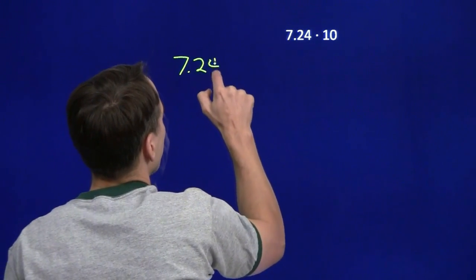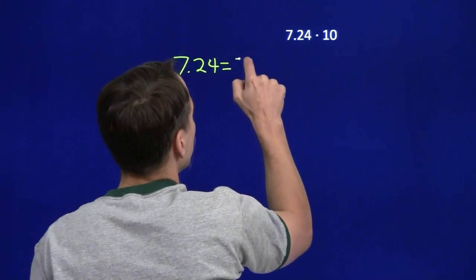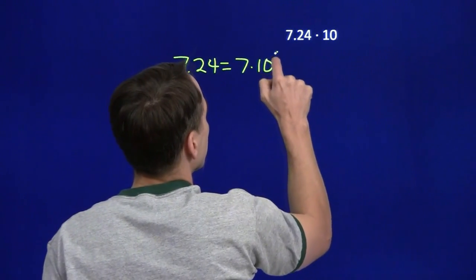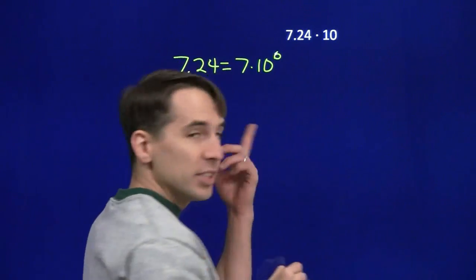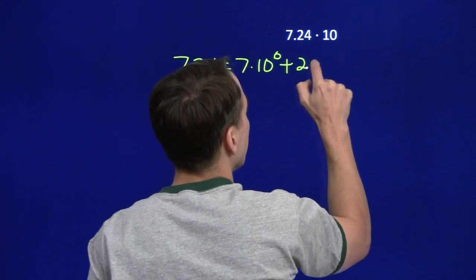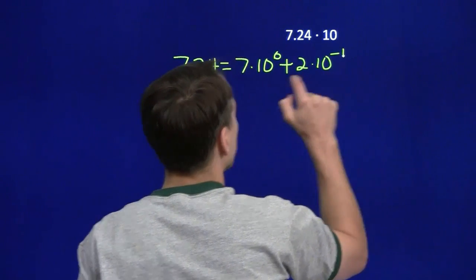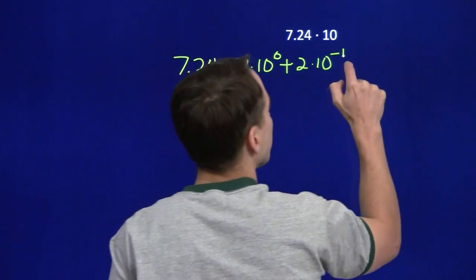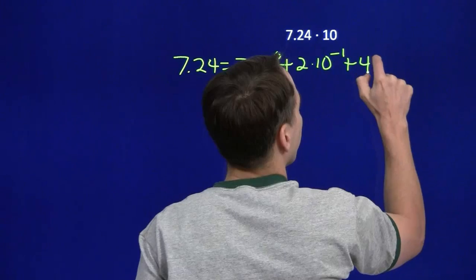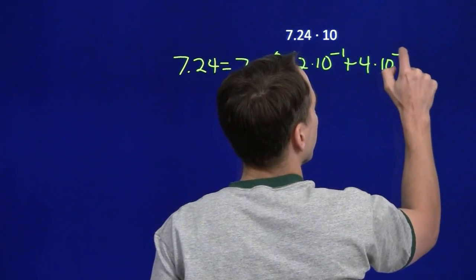We've got 7.24. The 7 is in the units place, so that's 7 times 10 to the 0. The 2 is in the tenths place — it's 2 times 10 to the minus 1. And the 4 is out there in the hundredths place, 4 times 10 to the minus 2.